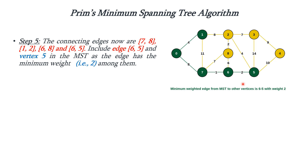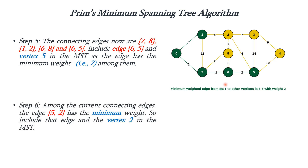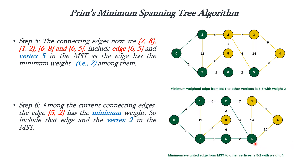Next we have to consider the remaining vertices from 1, 6, 5, and 7. Among these, the vertex connecting with 5 and 2 is minimum. So we are considering that and adding it into the MST.